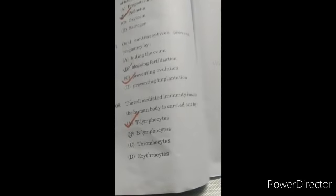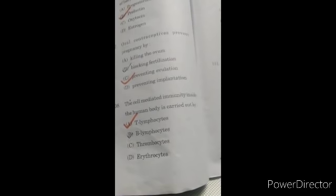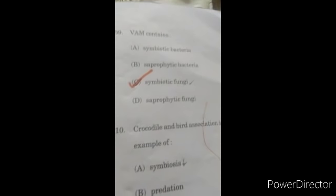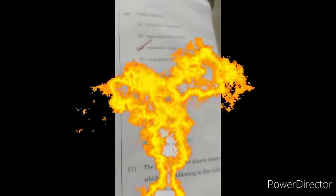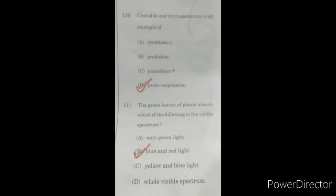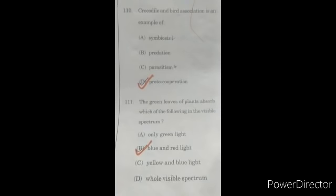The cell-mediated immunity inside a human body is carried out by T lymphocytes. Then VAM contains C option, symbiotic fungi. Question 110: crocodile and bird association is an example of D option, protocooperation.